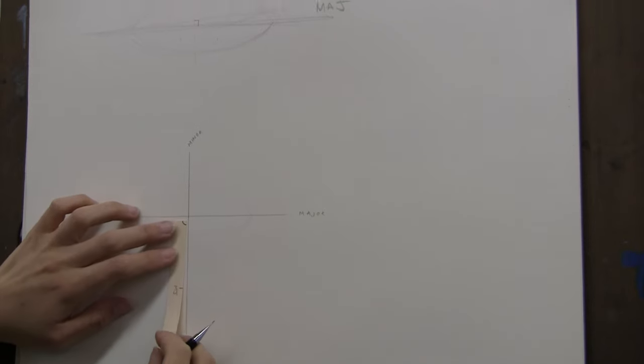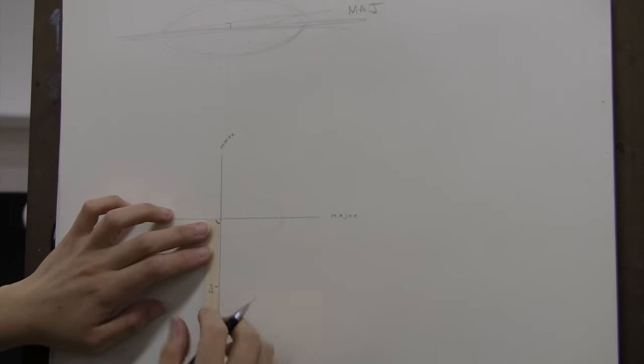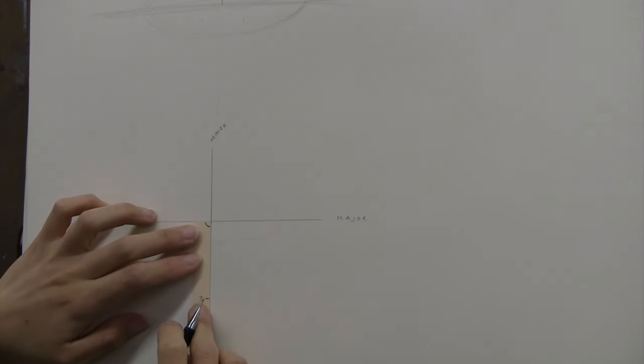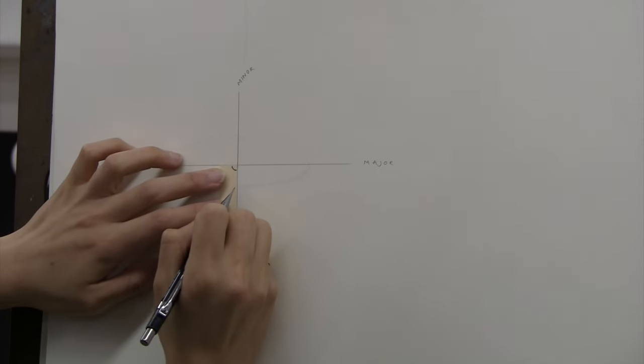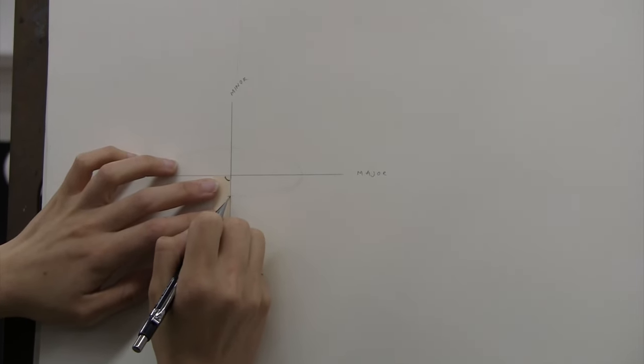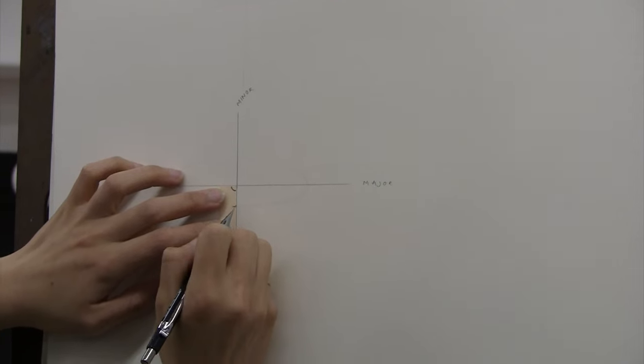And I'm going to label that MJ for major. I'm going to do the same but on the minor line. So I'm lining it up right in the middle. And where the ellipse ends, I'm going to put a mark and I'm going to label it minor.